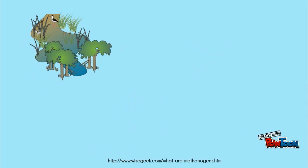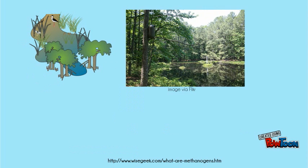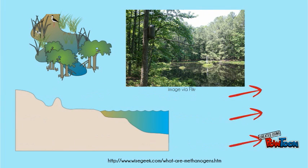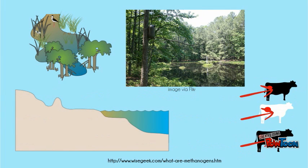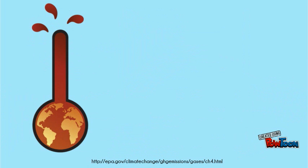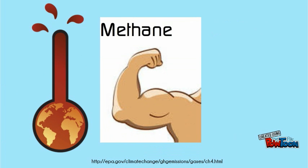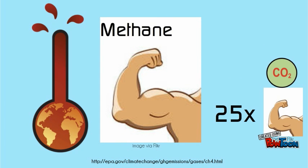In addition to the primitive pathways, today methanogenesis occurs in marshes and swamps, ocean sediments, and the guts of cows and other ruminants. The methane production from these environments can contribute to climate change due to the fact that CH4 is approximately 25 times more potent of a greenhouse gas than carbon dioxide over a 100-year period.